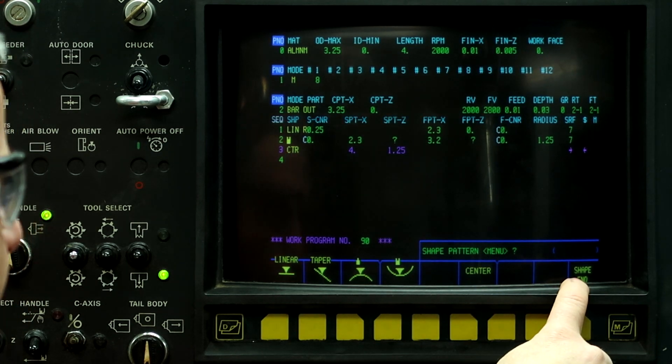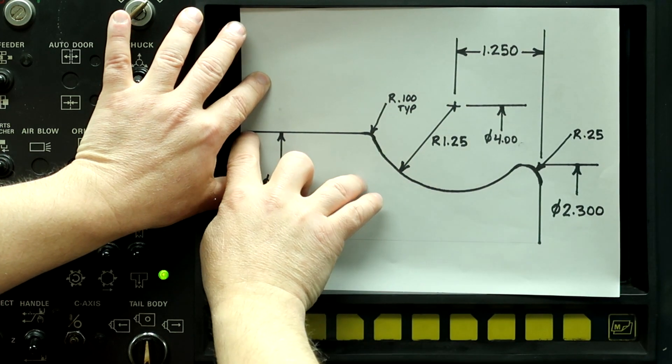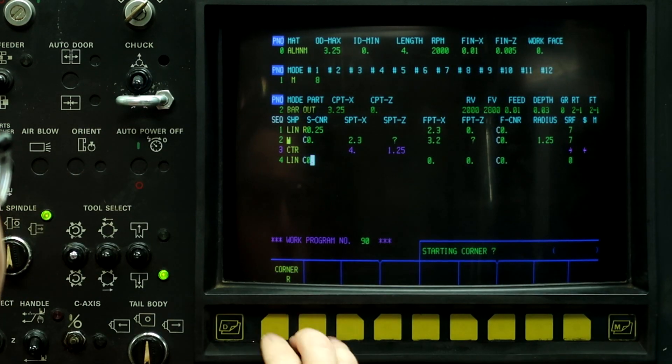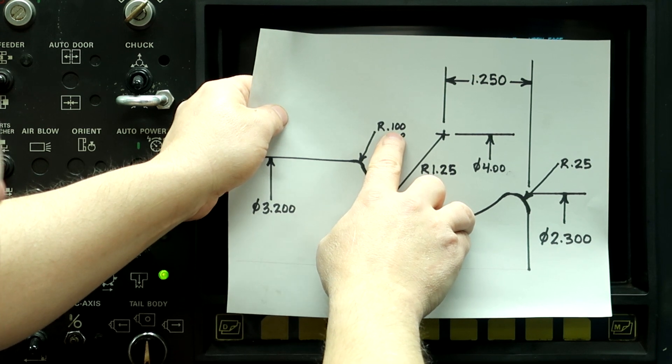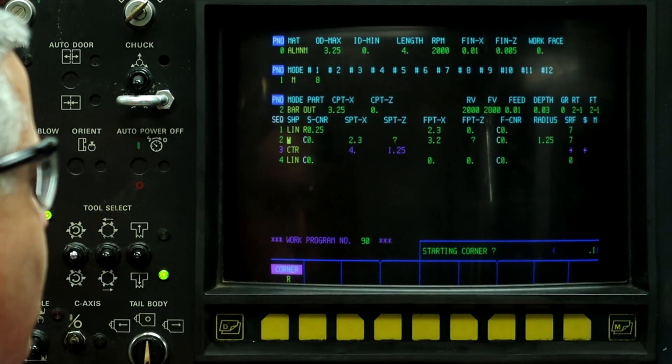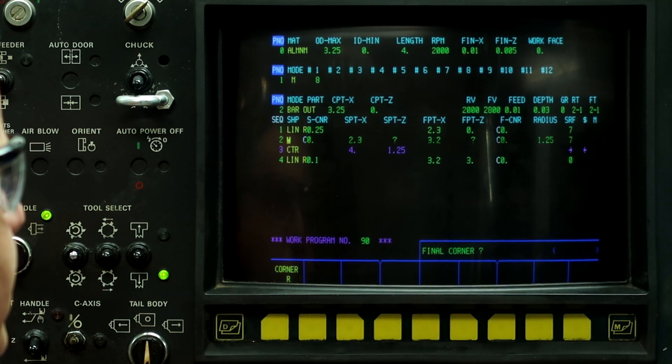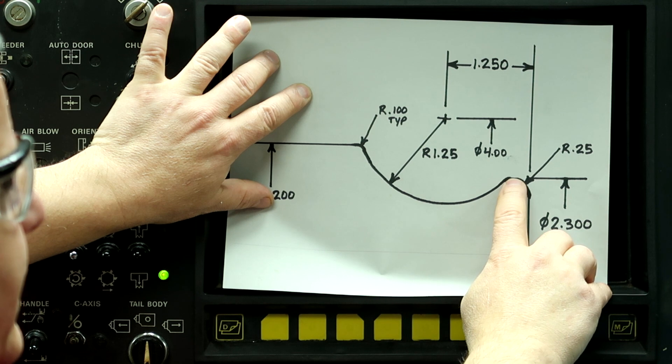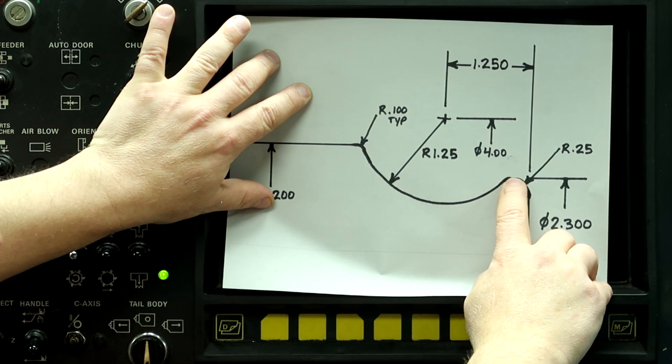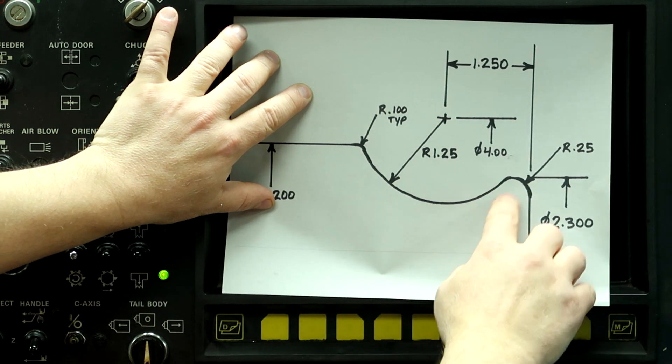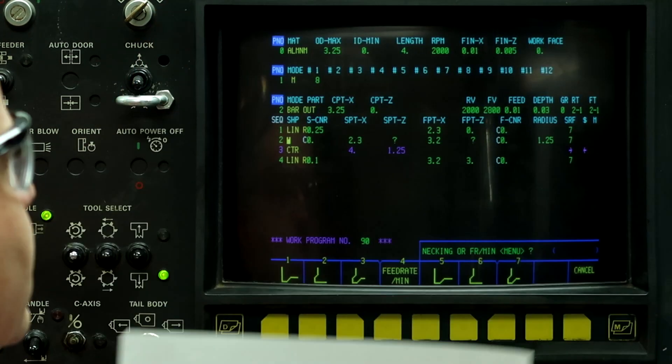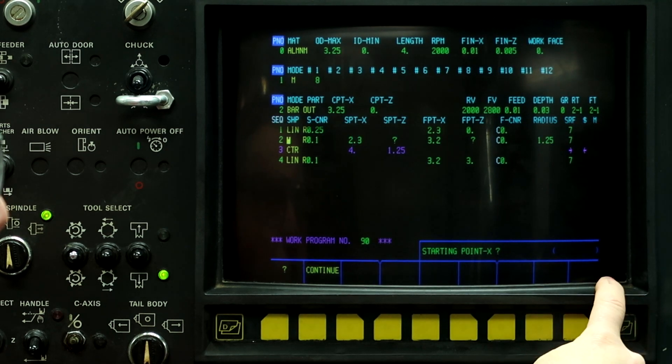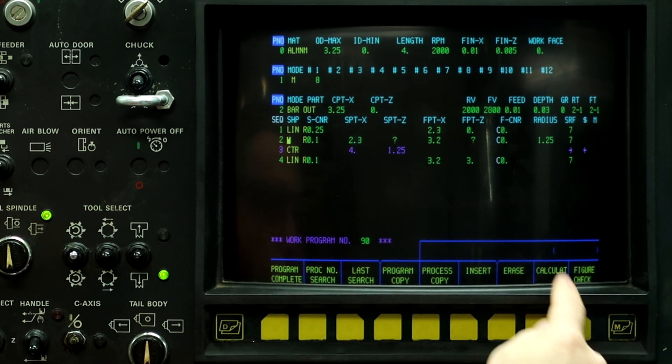And then we're going to program this horizontal line here, 3.2 inches. And we're going to give it a hundred thousandths radius. And we're going to go back three inches. And one thing I forgot to do was put in this radius right here at the start of the feature. It says a hundred thousandths typical, and there's a radius right here. So right here, radius point one input. And now we're going to push the right button, push calculate.